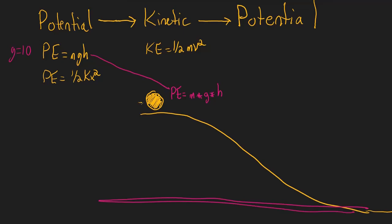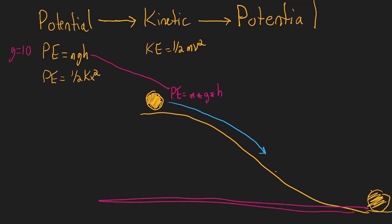Let's say we give the ball a nudge and it starts rolling down the hill, ending up at the bottom. Now the ball has no potential energy because its height is zero. Potential energy equals mgh, but h is zero, so potential energy is zero. All of its energy has been converted into something else — assuming no friction or air resistance, which on the MCAT we can safely assume unless explicitly told otherwise.